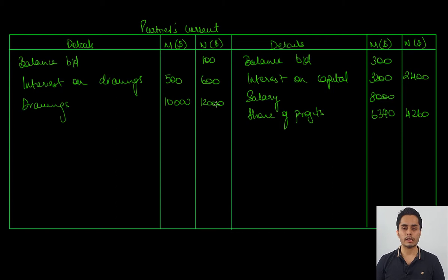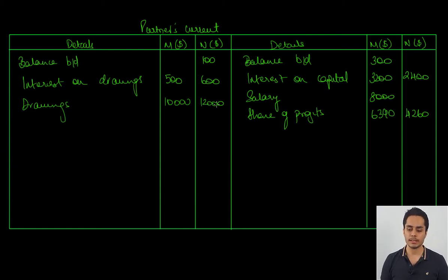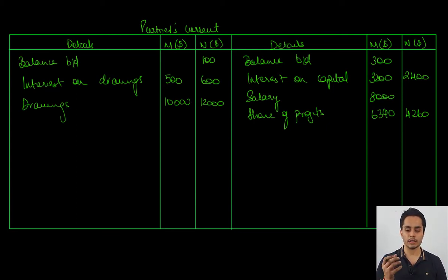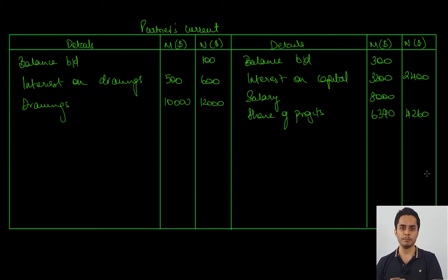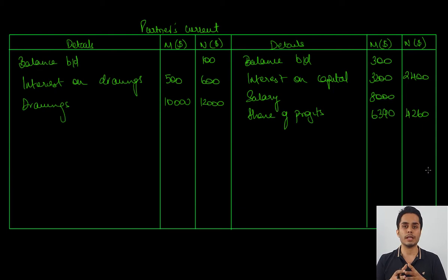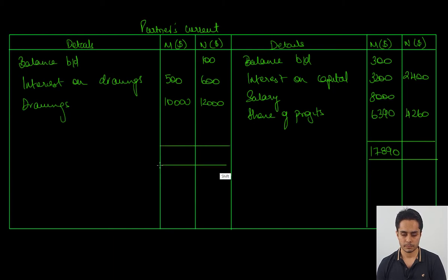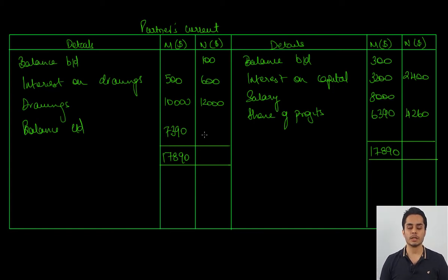Next, we need to balance the partner's current account by comparing for each partner whether the credit side or debit side is greater. For M, the total on the credit side is 17,890 and on the debit side it is 10,500 — clearly the credit side is greater. We take the total on the credit side of M and write the balance carried down on the debit side, showing that M holds a credit balance. The credit balance in M's current account is 7,390, which is the closing balance on 30 April 2021.